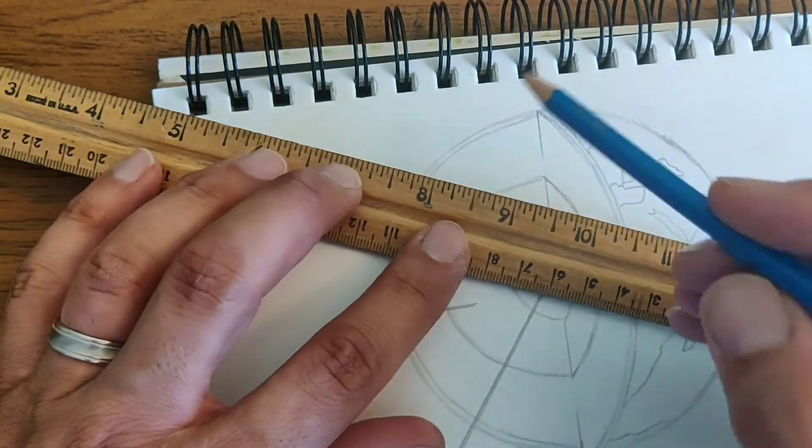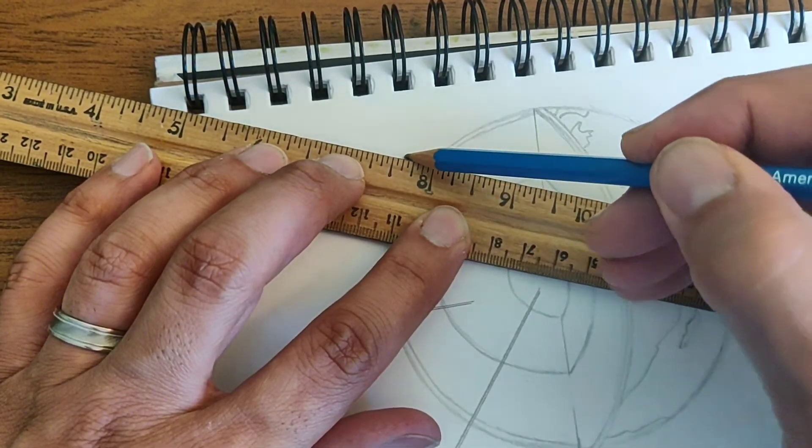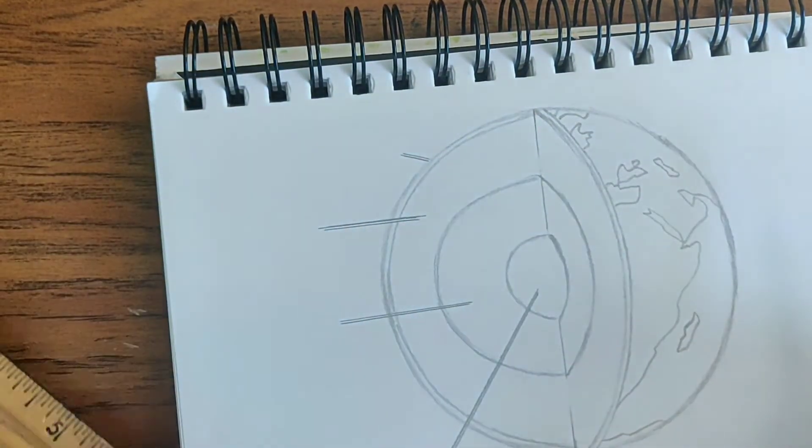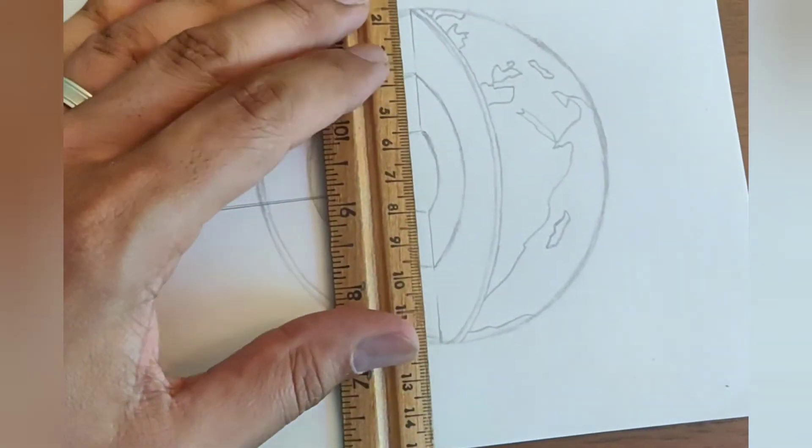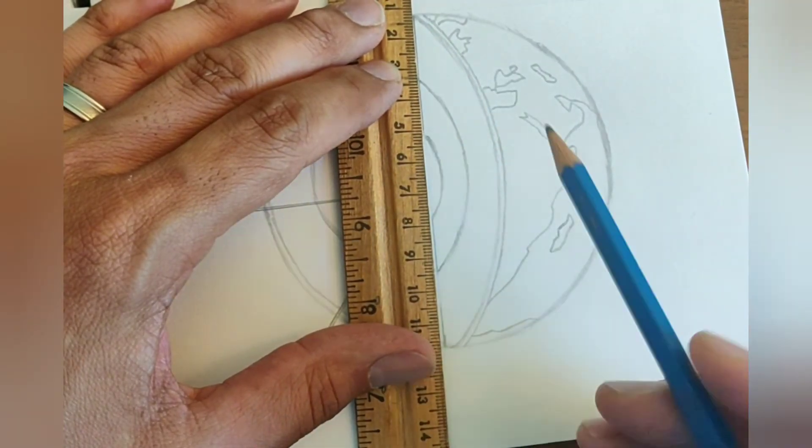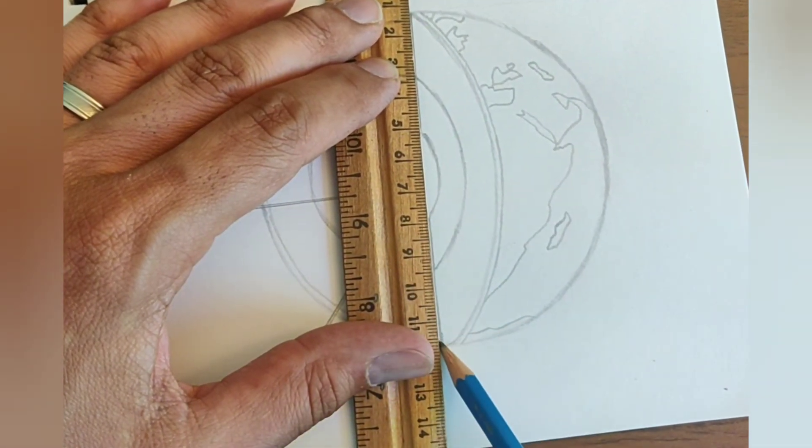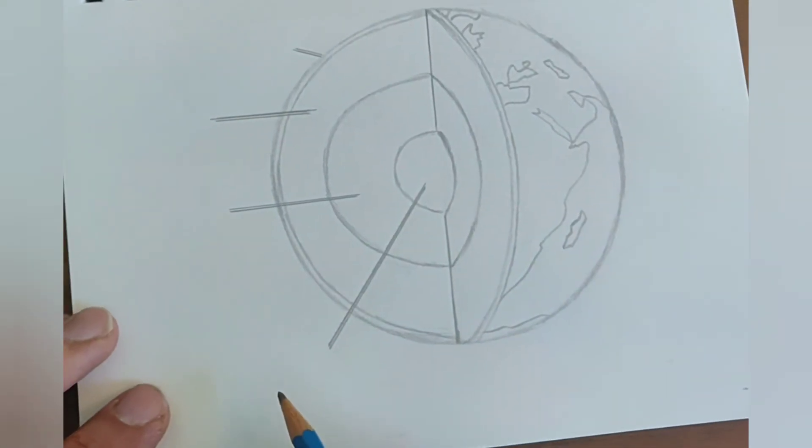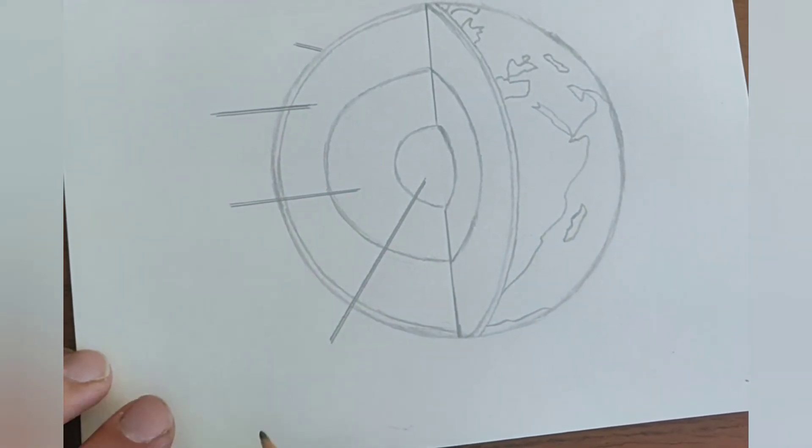And then I'm going to be pointing at the outer layer, which is the crust. Right there. Let me fix everything here before we finalize this. And I'm probably going to color it first and then I'll ink the lines. But actually, you know what? I can label it now.